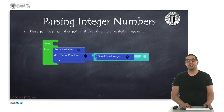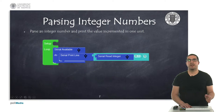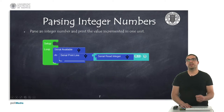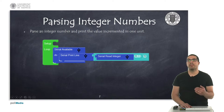In this third example, I'm going to show you how to parse integers. Whatever text we introduce on the console will be interpreted as an integer, and then we will sum up one.